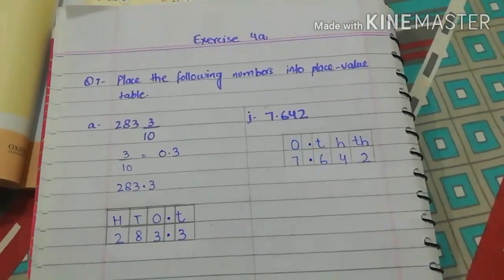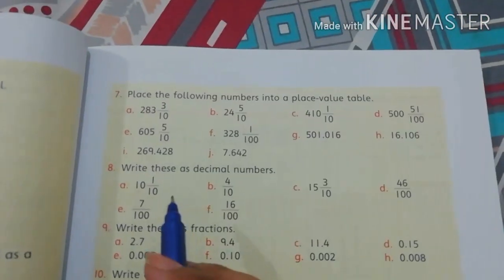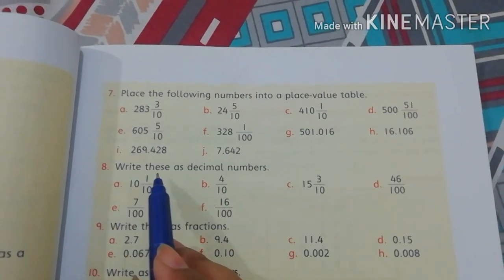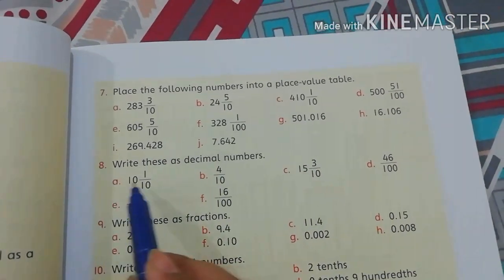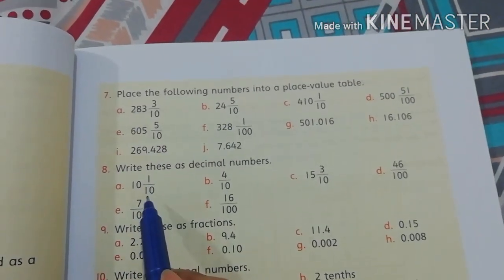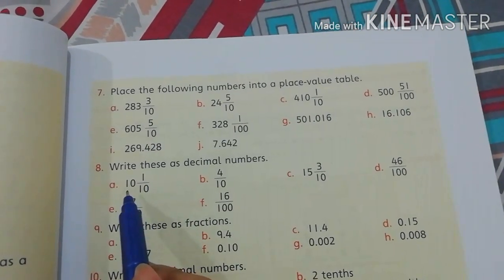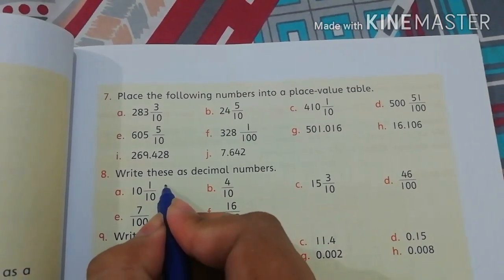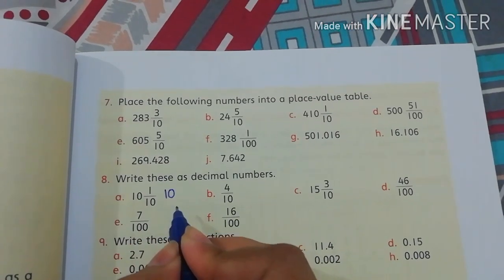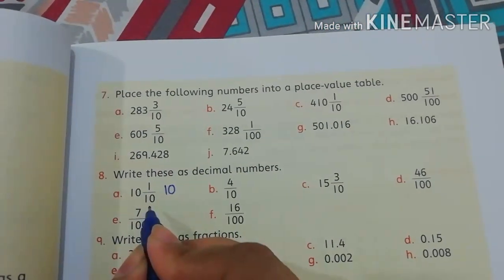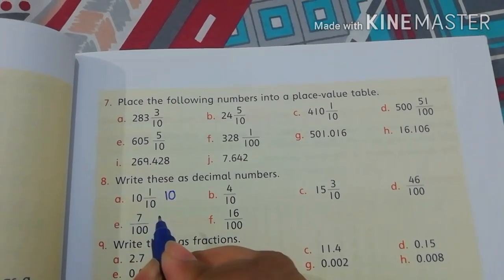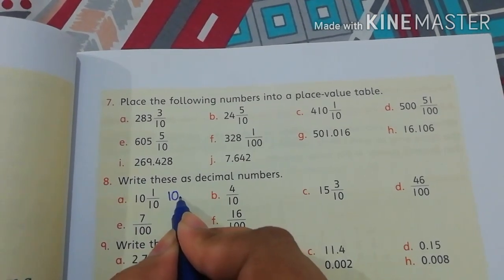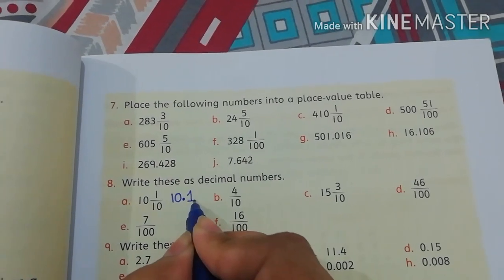Let's move to question number 8. Question number 8 is, write these as decimal numbers. Part A, 10 whole 1 by 10. Dear students, in mixed fraction we do not change the whole number. So, whole numbers, we do not change whole number. Then, 1 by 10th. 1 by 10th means, after decimal we have one value. That is 1. So, 10.1.